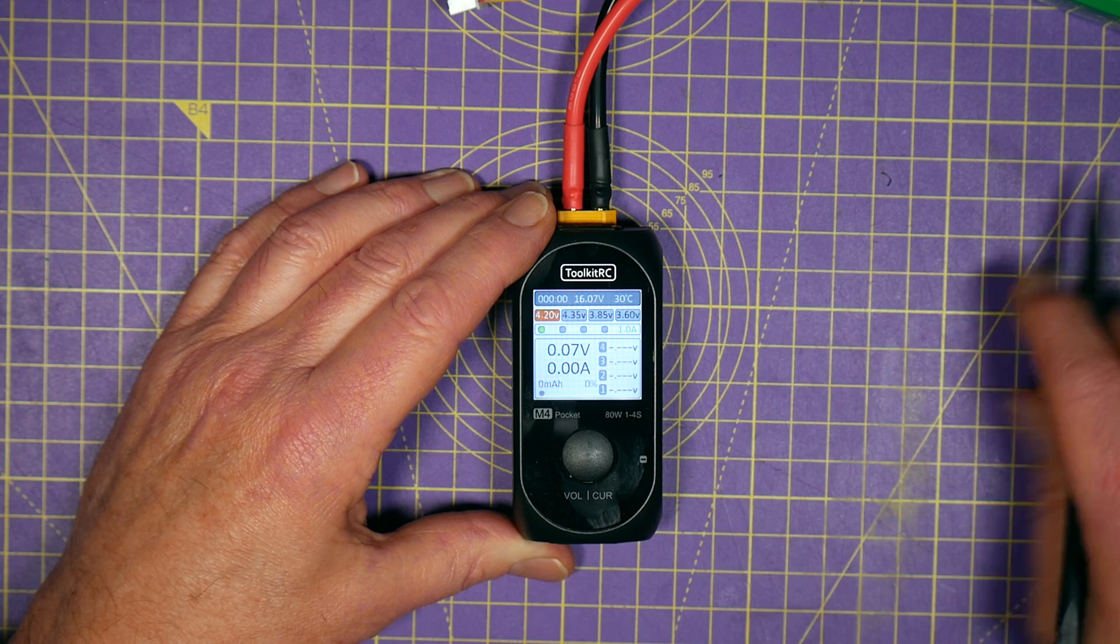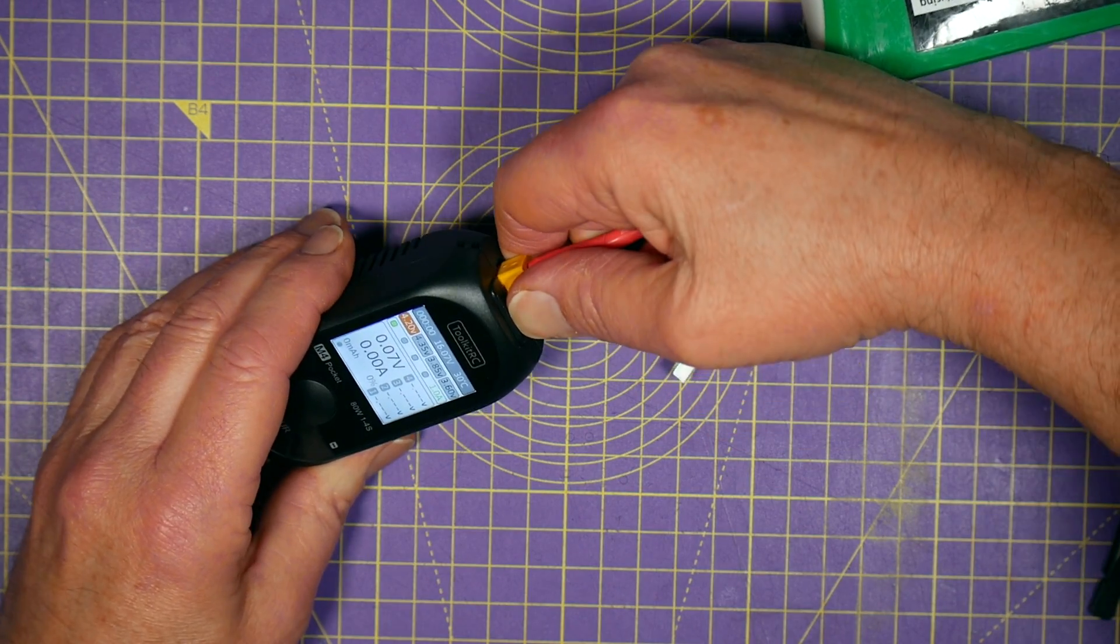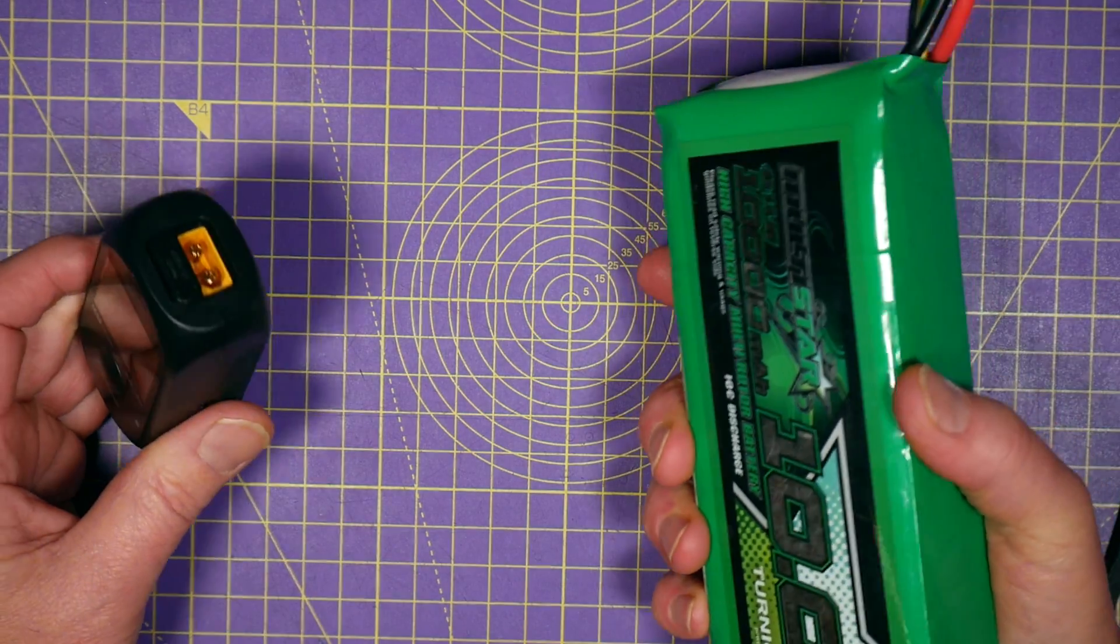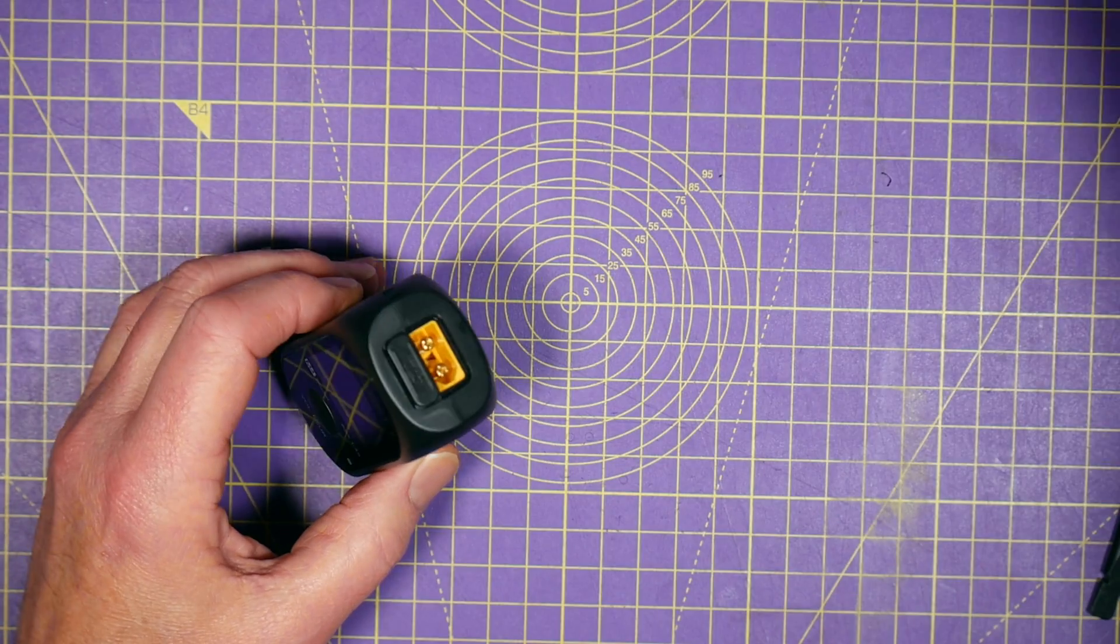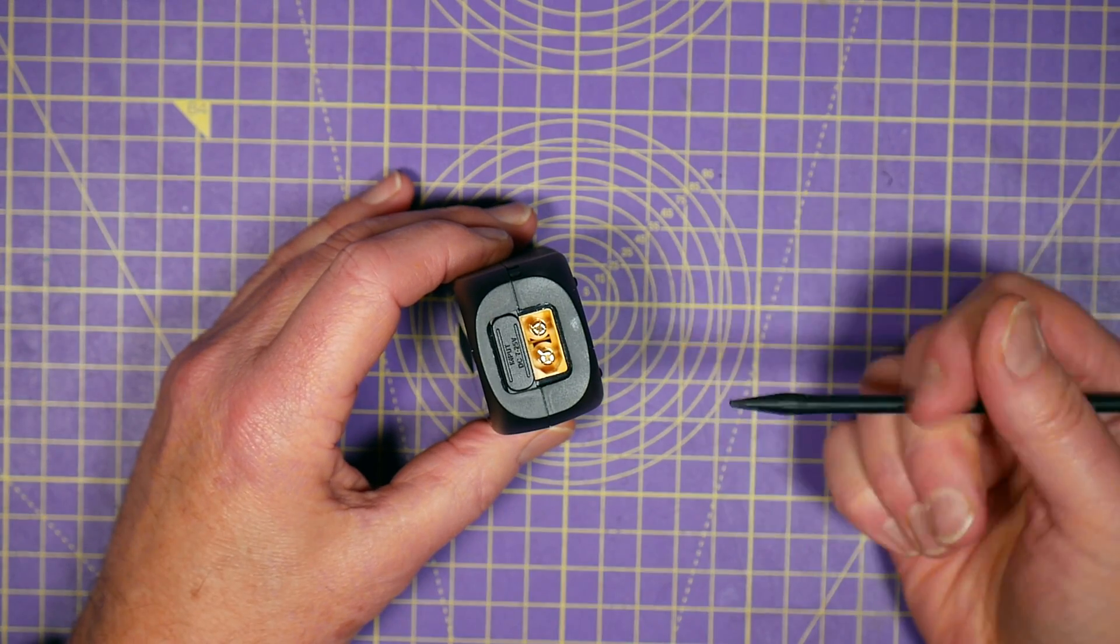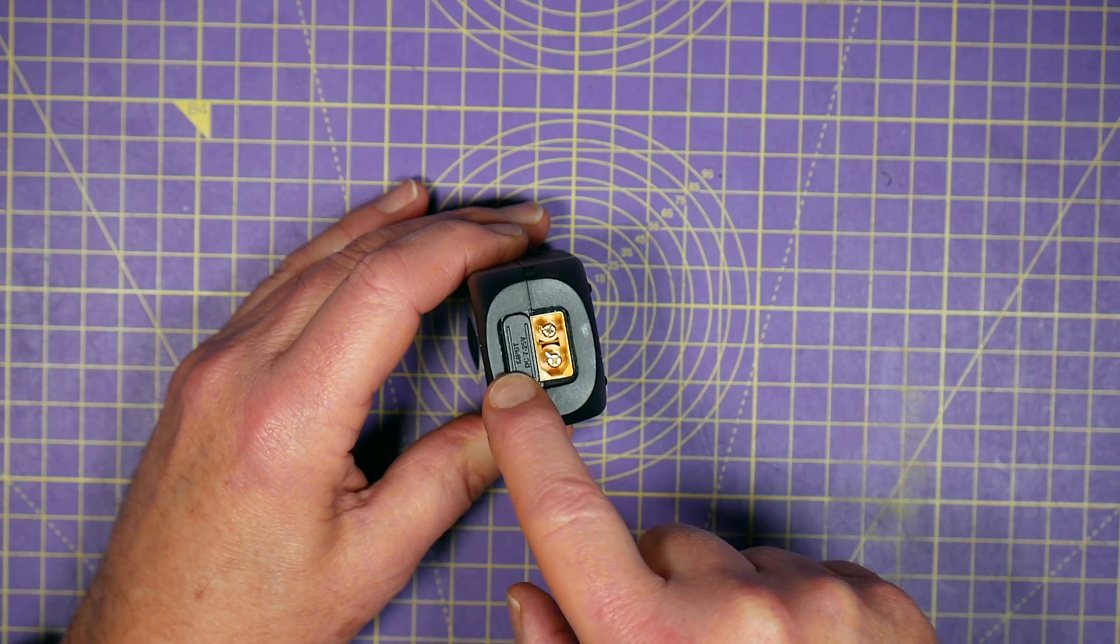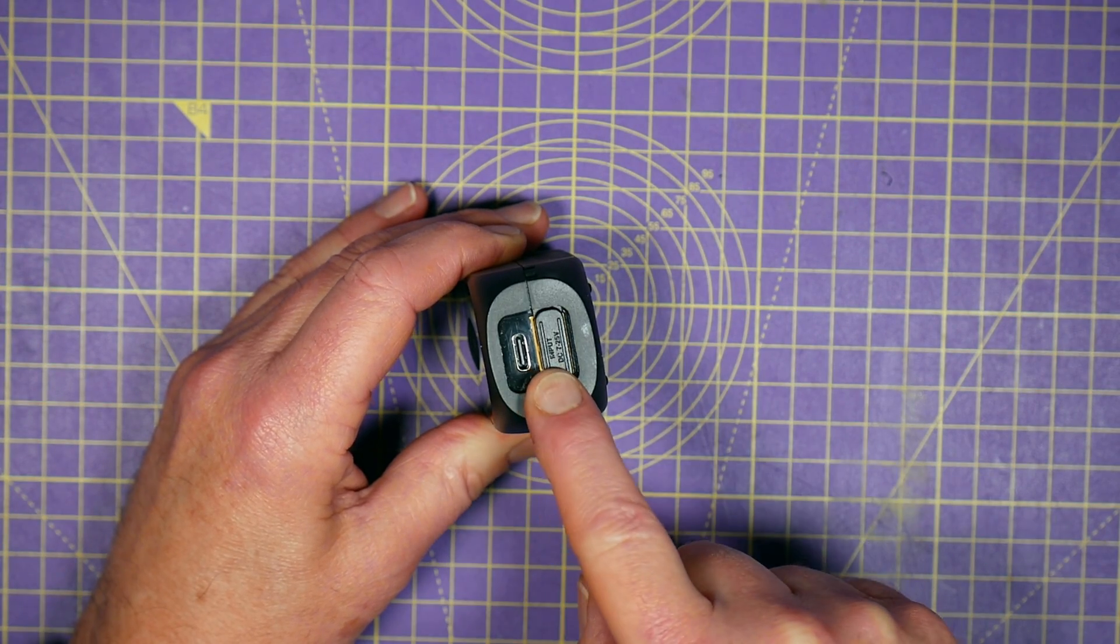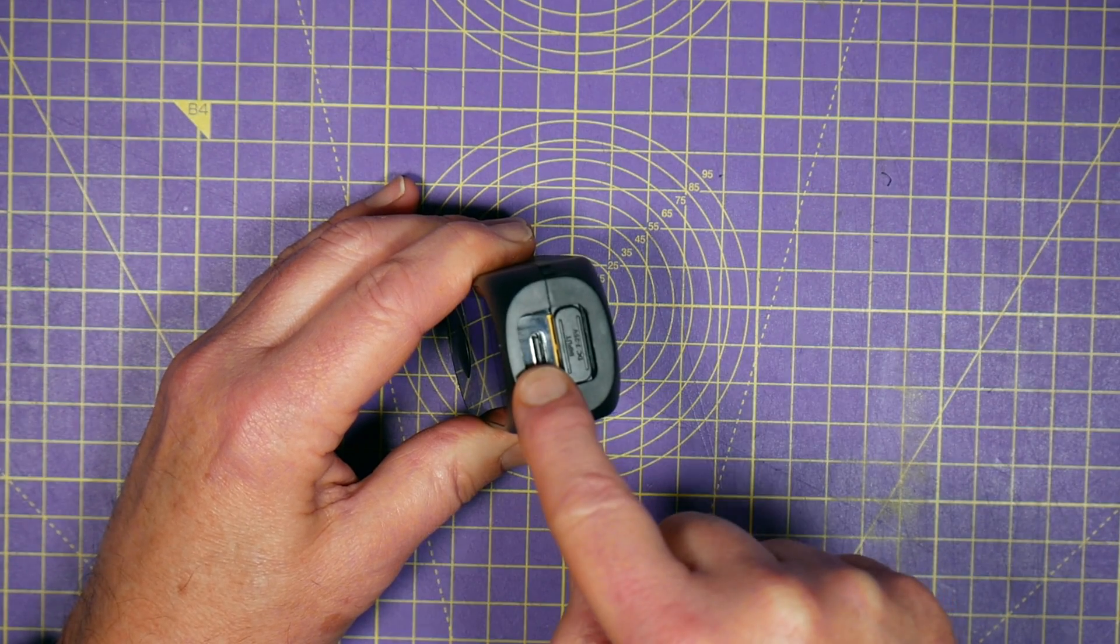And you just use this single button here to select how you want to charge. And you power this using an XT60 connector on the top. So you can use another battery like this or a DC supply if you want. Anything between 7 and 25 volts input voltage is just fine. Or you can flip this cute little latch and you can also power this using a USB power pack using USB-C connector.